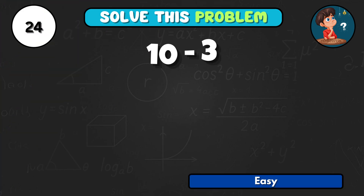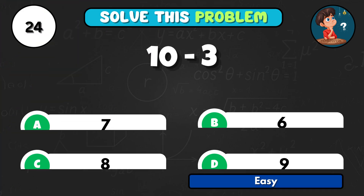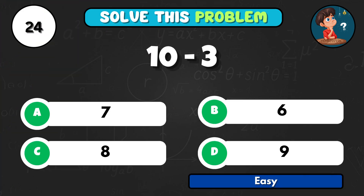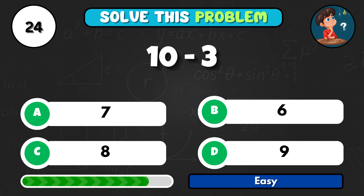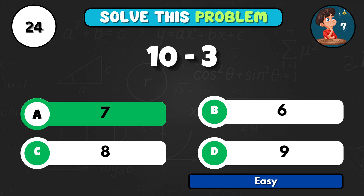Take away 3 from 10. What's the answer? That equals A7.